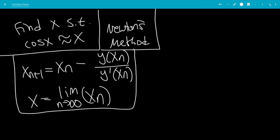So what is y? We want cosine x to be equal to x. That's what we want to approximate. So cosine x minus x equals 0. Now we're going to call this function y. So this is when it's equal to 0.